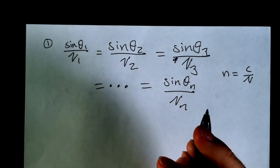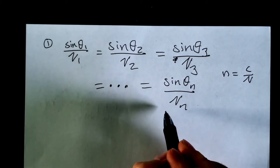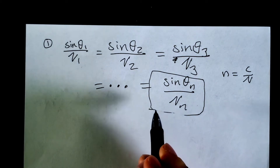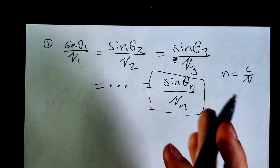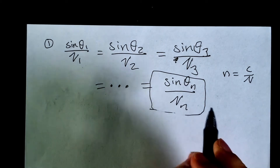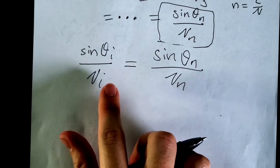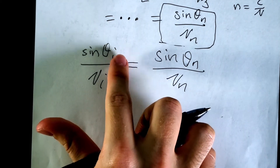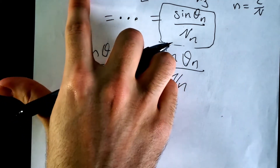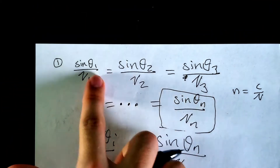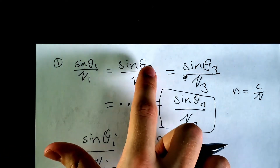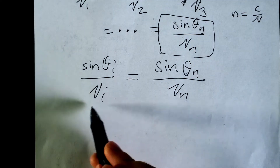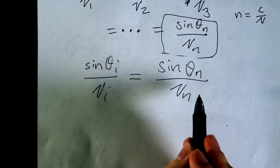That proportion being equal at every medium is really important. Here, sine θ_i over v_i equals sine θ_n over v_n, where n is the final medium and i represents any of the previous mediums — sine θ_1 over v_1, sine θ_2 over v_2, and so on. That represents any of the mediums, and sine θ_n over v_n represents the final one.